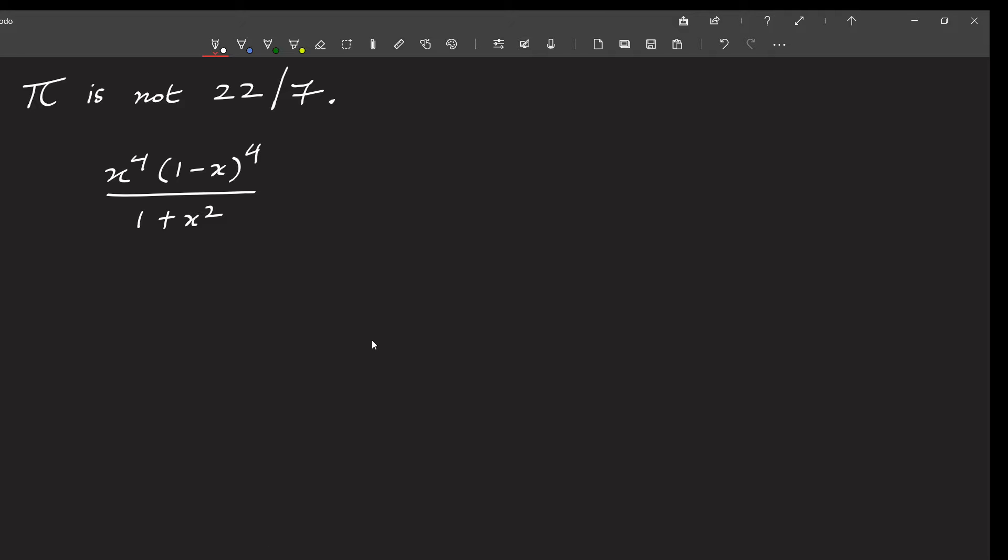Now let us begin with the proof. Consider the ratio of two polynomials. In the numerator, we have x to the power 4 into 1 minus x to the power 4. And in the denominator, we have 1 plus x squared. We want to take the integration of this quantity from x equal to 0 to x equal to 1. But before we take the integration, notice carefully that in the numerator as well as in the denominator, every single term is positive. x to the power 4 is positive. 1 minus x to the power 4 is positive. And in the denominator, 1 plus x squared is again positive. So every single term is positive both in the numerator and the denominator.